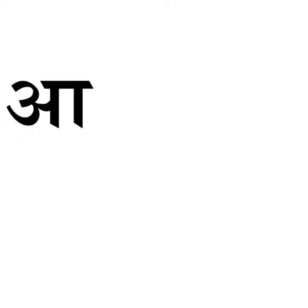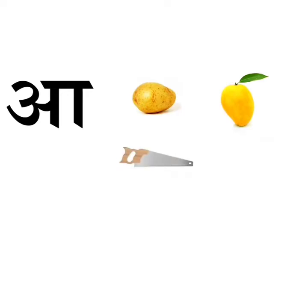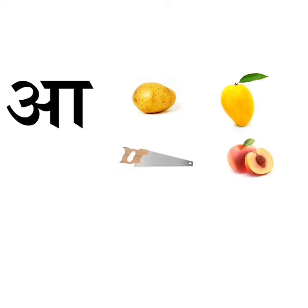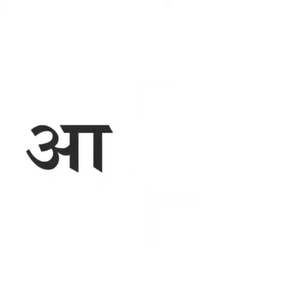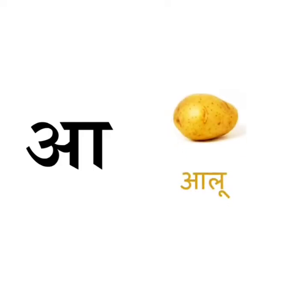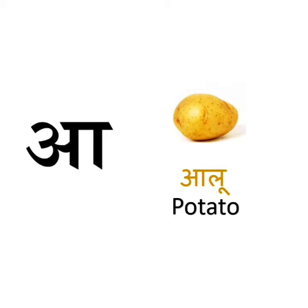A se aloo, A se aam, A se ari, A se aadu, A se aag. A se aloo — aloo means potato. Potato is a vegetable. It is brown in colour.